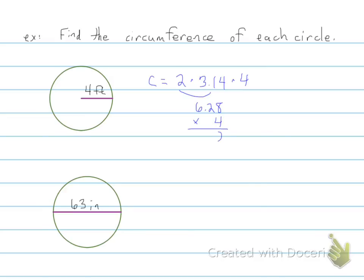We get 32. 2 times 4 is 8. There's a 1 there and then 25.